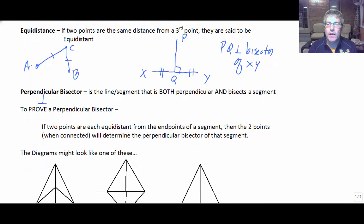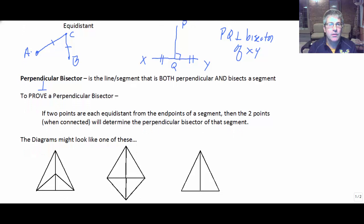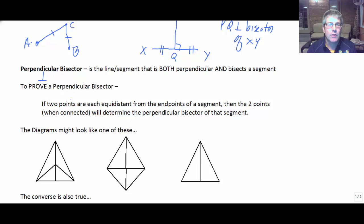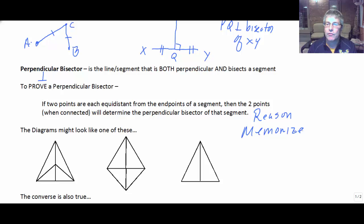We have a couple of ways to prove a perpendicular bisector. In this section, we're going to prove one by showing that if two points are each equidistant from the endpoints of a segment, then those two points, when connected, will determine or form the perpendicular bisector of that segment.